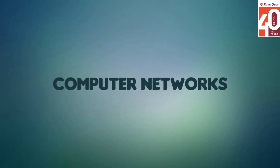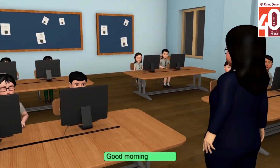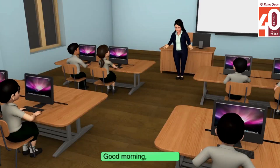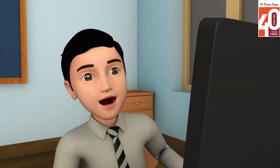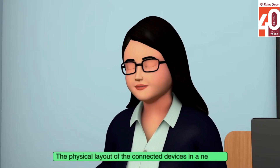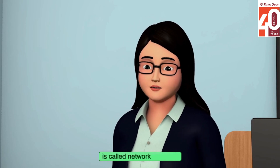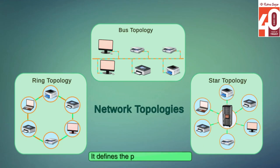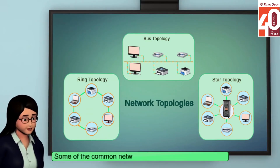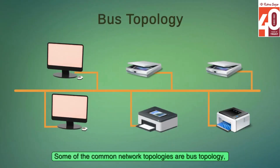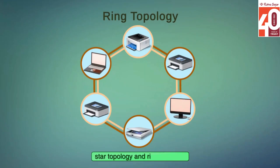Computer Networks. Good morning ma'am. Good morning students. Today we will learn about network topology. What is network topology? The physical layout of the connected devices in a network is called network topology. It defines the path that the nodes, computers or other electronic devices in a network follow to exchange information. Some of the common network topologies are bus topology, star topology and ring topology.